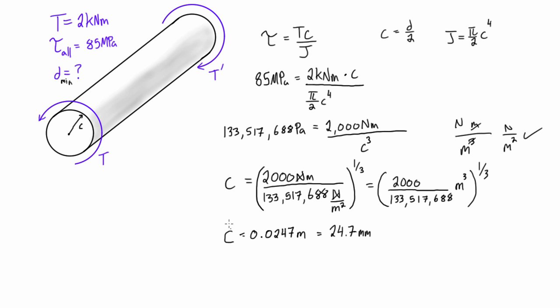So what we want to do is we want to find out what the minimum diameter of the rod is, so we'll just multiply that by two. So we have d is equal to c times 2, so we have 24.7 millimeters times 2, and that's going to give us our minimum diameter of 49.4 millimeters.